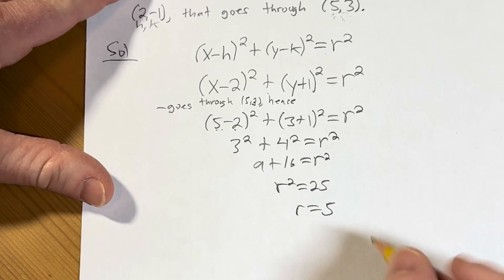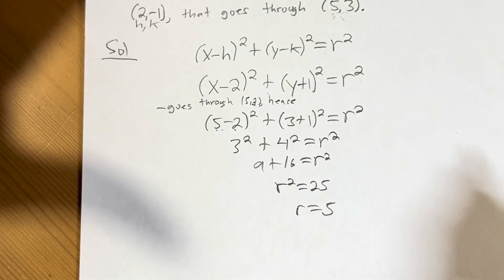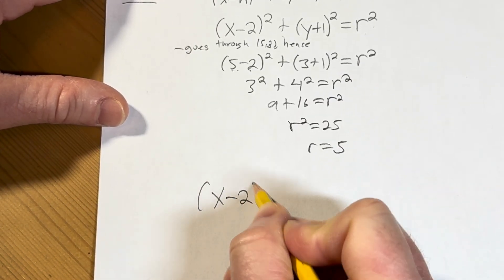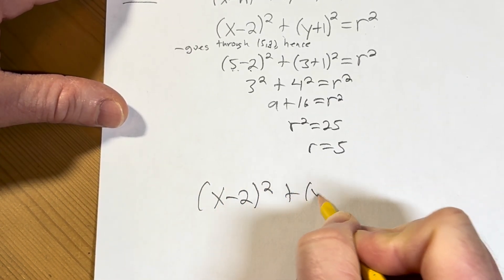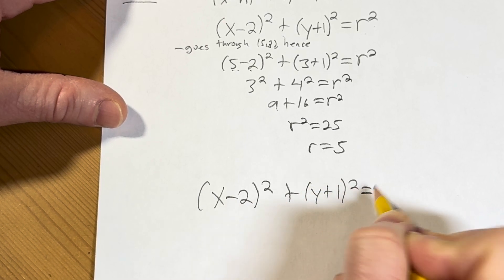Okay, so now we have r. And so we're good, right? So we're good, we just take the r and plug it back in here and we're golden, right? So this is going to be (x - 2)² plus (y + 1)² equals 25.